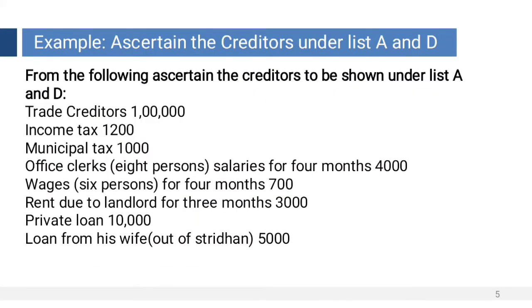Now let us learn one example. From the following, ascertain the creditors to be shown under List A and List D, identifying the items that come under each list.